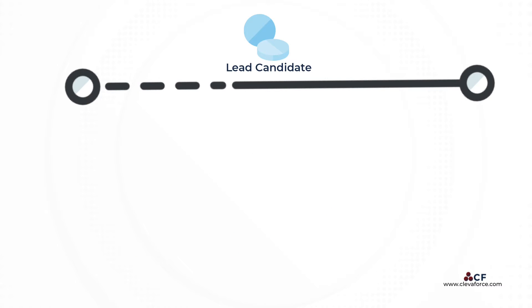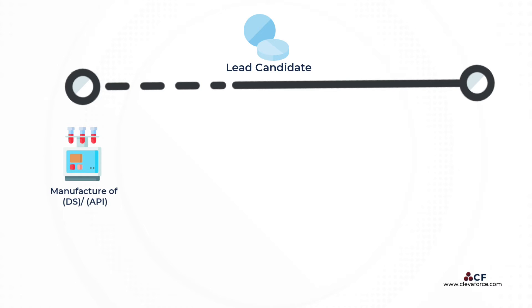Once a lead candidate is identified as a product of drug discovery, a typical preclinical development program consists of six major efforts. The first is Manufacture of Drug Substance (DS), also known as Active Pharmaceutical Ingredient (API).